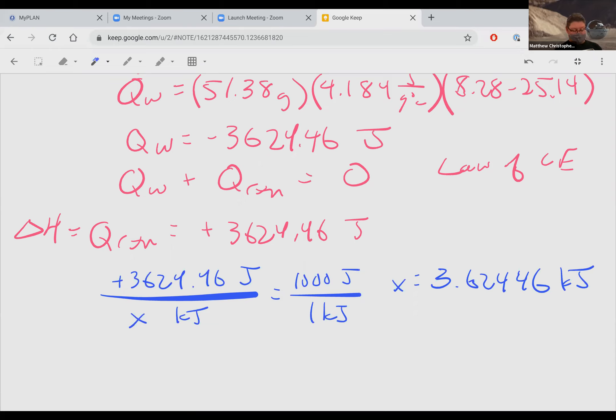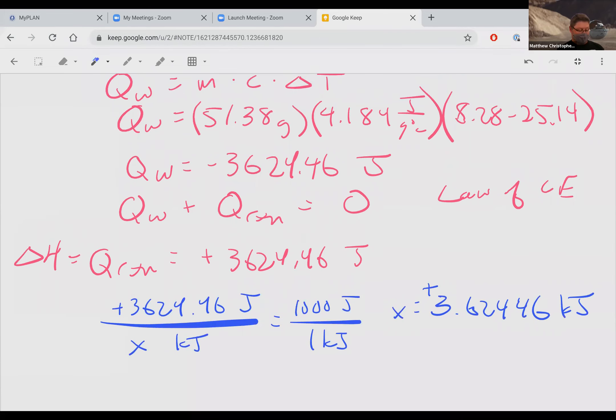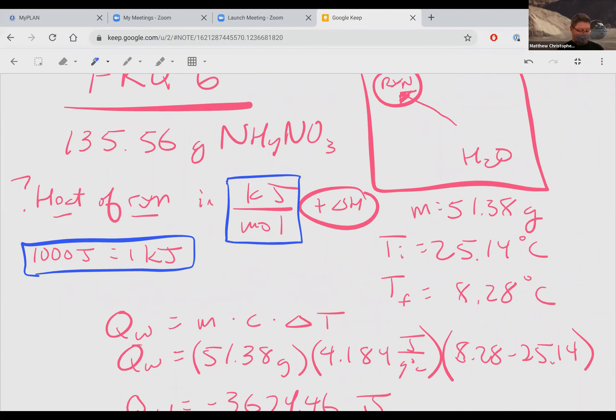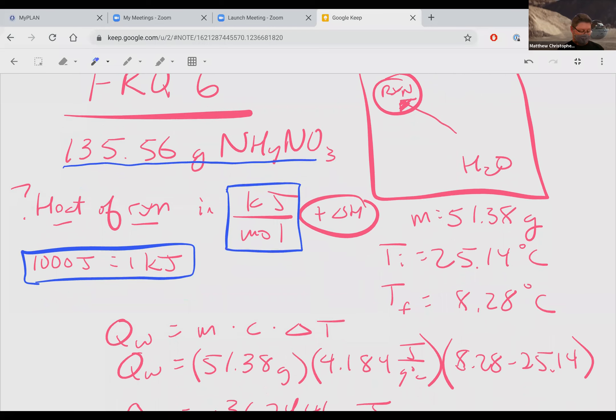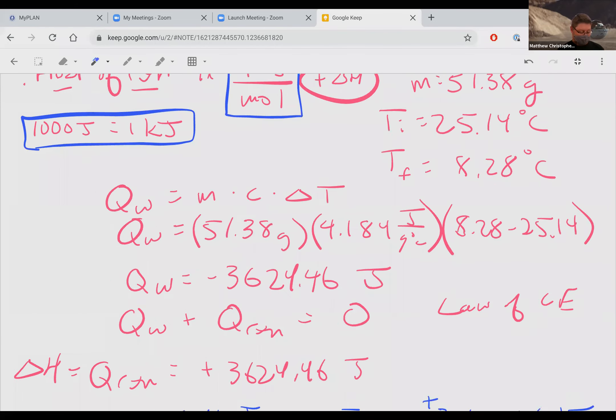So once you're at this point, you're doing pretty good. It's still positive. It's not going to become negative for some odd reason. That's the amount of energy released by your chemical. The chemical is 135.56 grams of ammonium nitrate. So the last step here is we want it in kilojoules per mole. I have 135.56 grams of ammonium nitrate.